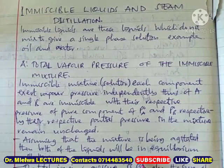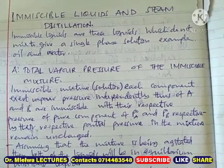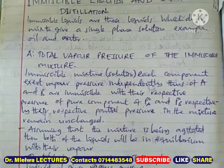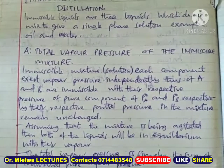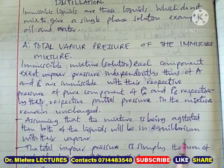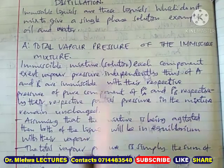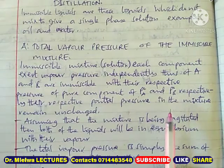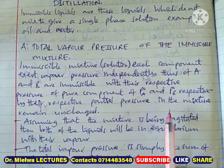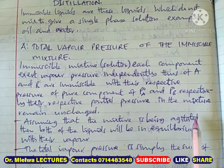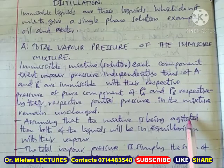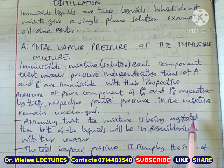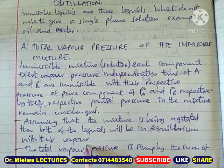Now let us look at the total vapor pressure of the immiscible mixture. In an immiscible mixture, the total vapor pressure equals the vapor pressure of the pure liquids because they do not mix. Each component exerts a vapor pressure independently of the other. So if we have two components A and B, component A exerts a vapor pressure independent of component B, with their respective pure vapor pressures P-naught of A and P-naught of B.